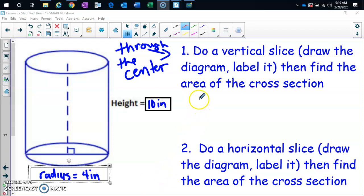Vertical slice, top to bottom. When I draw my slice, it is going to be a rectangle. The thing that people were doing wrong, this bottom part, this is the radius of four. The whole diameter is 8 inches by 10 inches.